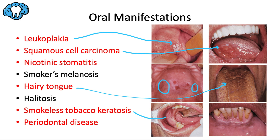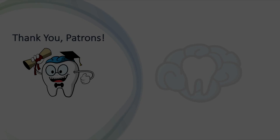Smokeless tobacco keratosis is a white patch that forms where the chewing tobacco product is held. For any of the smokeless tobacco products — snuff, chaw, or snus — if it was contained within the vestibule, you would begin to see this white patch with a corrugated appearance. Periodontal disease is also evident in smokers. You can see gingival recession associated with snuff use, and periodontal health in general is negatively affected by smoking.